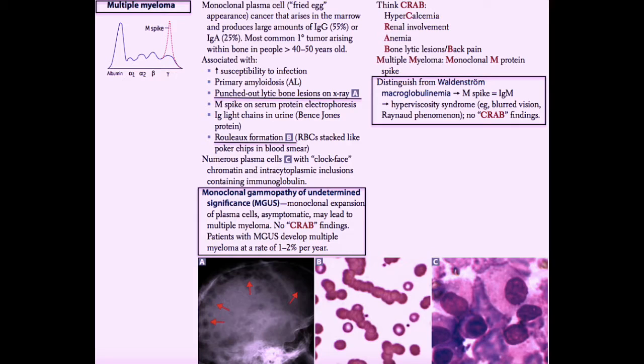The first is that the tumor can directly invade the bone. And what you're going to see if you order an x-ray on these patients is a lytic or punched out bone lesion. This will usually happen in long bones, such as the humerus, for example.